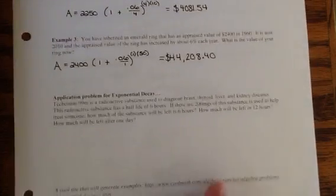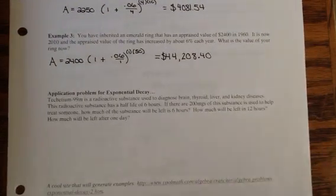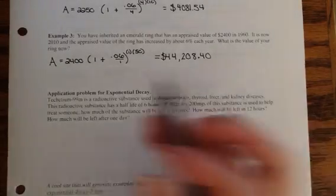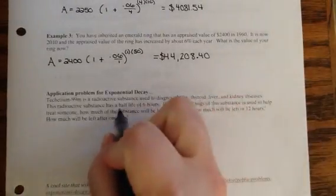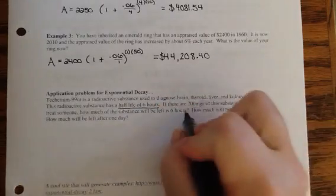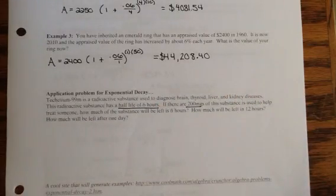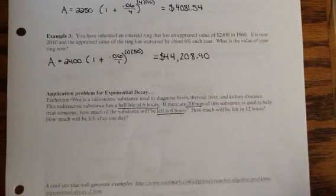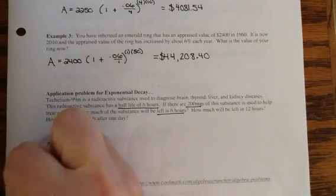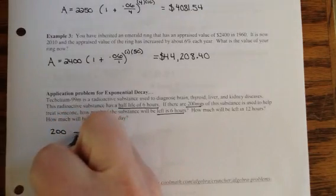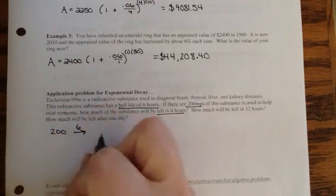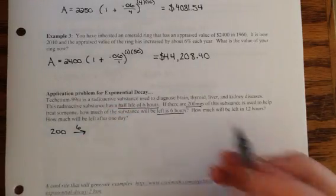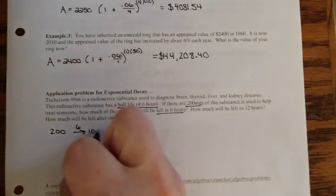Down here at number 4, it's talking about radioactive material that's used to diagnose brain, thyroid, liver, and kidney diseases. The radioactive substance has a half-life of 6 hours. I start with 200 milligrams of the substance, and then it says how much is left in 6 hours. So if I start with 200, and 6 hours go by, after 6 hours, because 6 hours is its half-life, it's going to halve itself. So I'm down to 100.